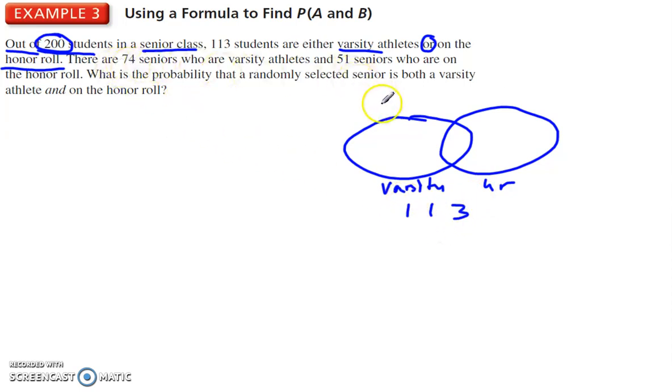Now, we know that 74 are varsity, and we know that 51 are on the honor roll. Okay, together they make up 113. Now, we know that 74 plus 51 is not 113. So, we have to have some overlapping ones. Okay, 74 plus 51 is actually 125. Alright, so I can figure out how many have to be overlapping between these.